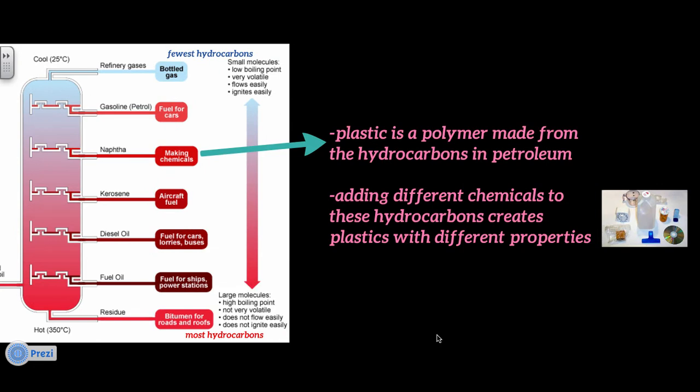So the plastics are made from the hydrocarbons that were in the petroleum. So the petroleum is separated out into its different parts. Then from one of those parts, the plastic is made. So by adding different chemicals to these hydrocarbons, that's how we're able to get plastics with so many different properties.